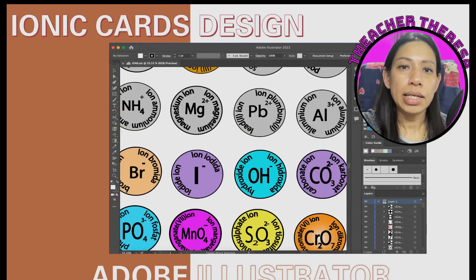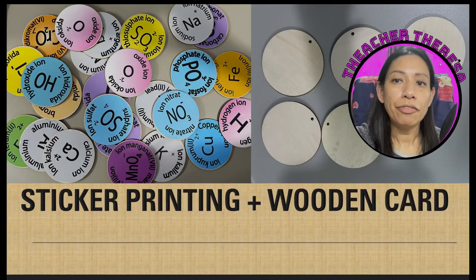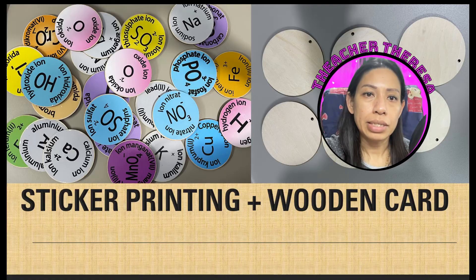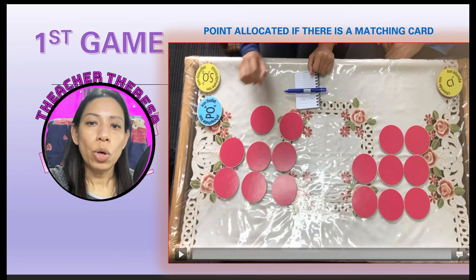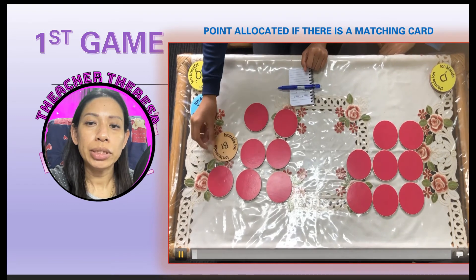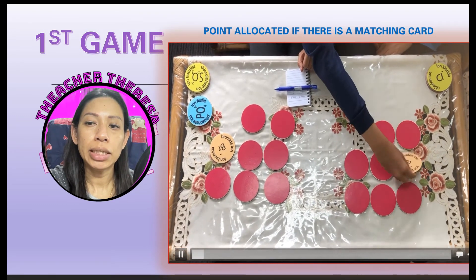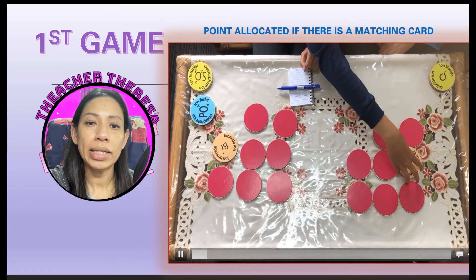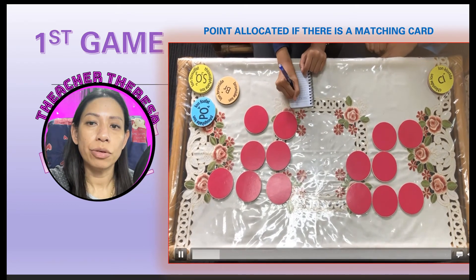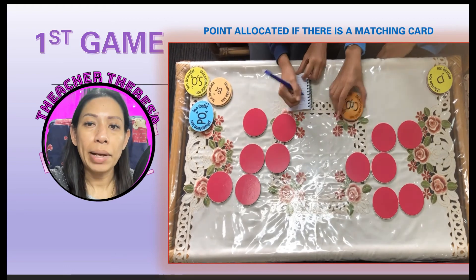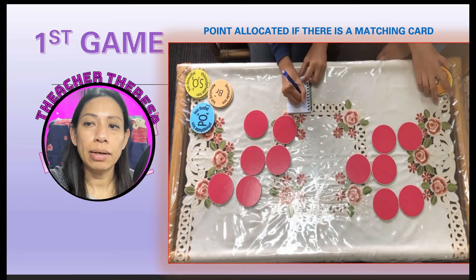The ionic cards were designed using Adobe Illustrator, after which stickers are printed and pasted on a wooden card. Students will pick two similar ions where they need to know the name of the ions as well as the formula. The correct pair will get one point.